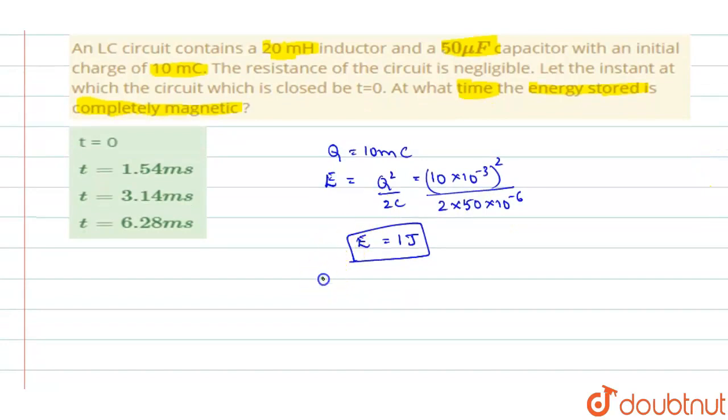So that frequency of oscillation present will be equal to F0 is 1 by 2 pi into root LC. So this becomes 1 by 2 pi into root L. L is 20 into 10 power minus 3 into C is 50 into 10 power minus 6.